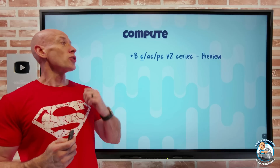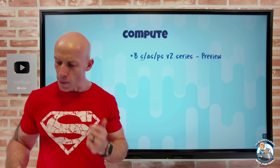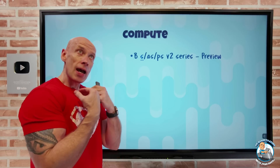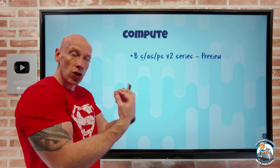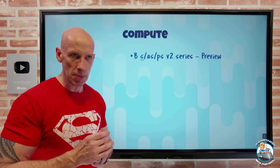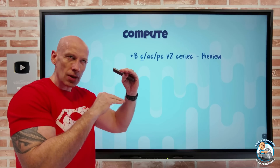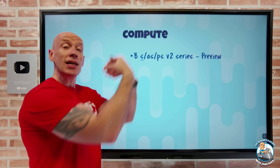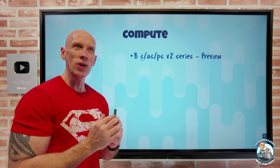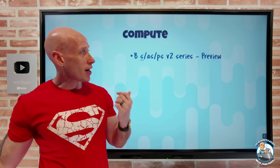On to what's new. On the compute side, we now have a preview of the V2 of the B series. Remember, B was burstable — the idea is that rather than being provisioned at 100% of the virtual CPUs the VM sees, maybe you're provisioned at 20% of each virtual CPU, so you pay less money. And if you use less than the provisioned amount, kind of like accruing credit, you can burst beyond that 20% for a period of time. So if you have fairly bursty workloads that ordinarily don't need a lot of CPU but occasionally do, the B series is very attractive.